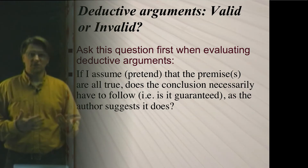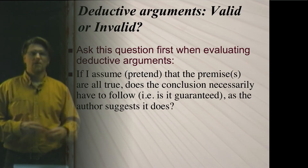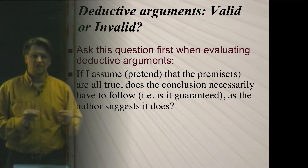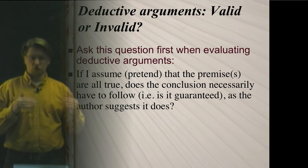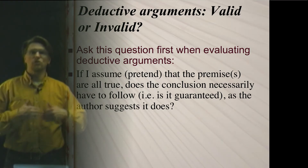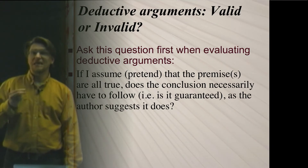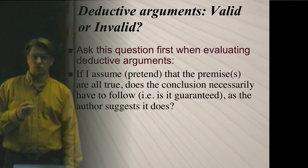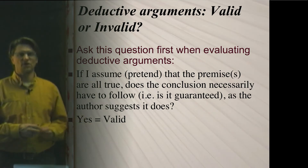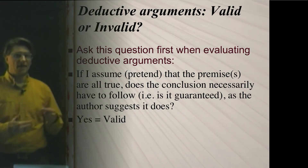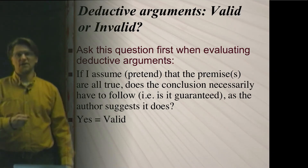To determine validity, we need to first assume — pretend, believe — that all the premises are true, whether or not they really are. When we assume they're true, we ask: would they then guarantee that the conclusion is true? If the answer is yes, we describe it as a valid argument — the conclusion would necessarily follow from those premises. On the other hand, sometimes we assume the premises are true but the conclusion is not guaranteed by those premises, and in that case we call this an invalid argument.